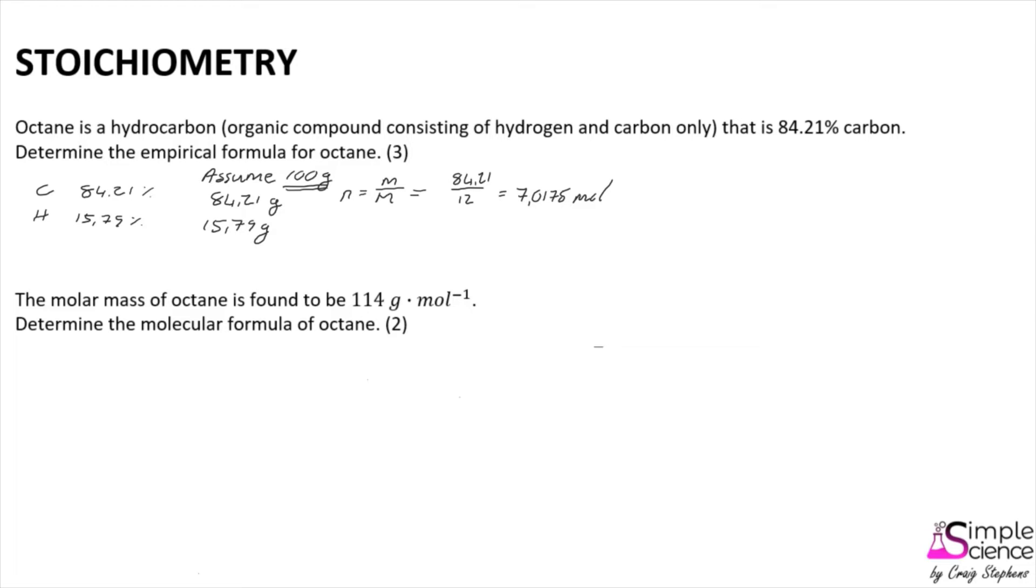We can do exactly the same for our number of moles of hydrogen, where our molar mass for hydrogen is 1. The number of moles is 15.79, and so we know that we have 15.79 moles of hydrogen.